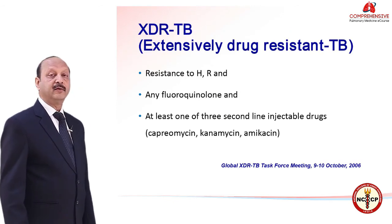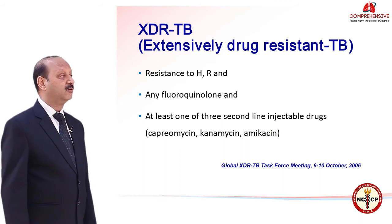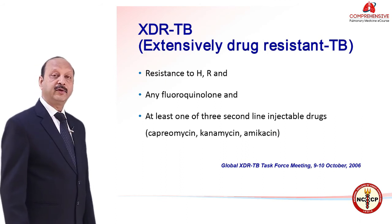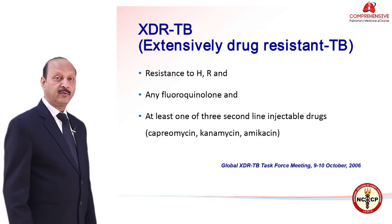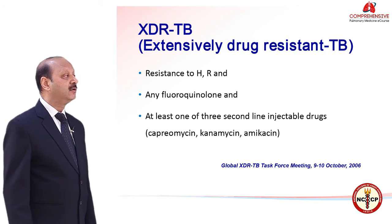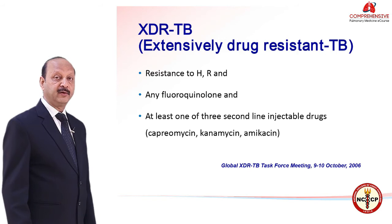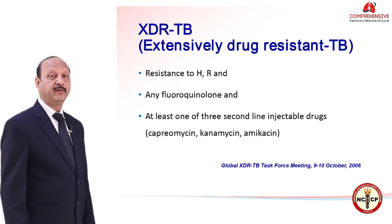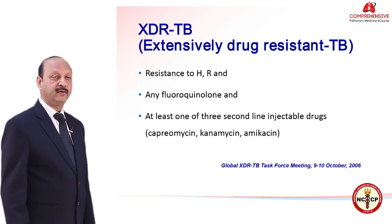XDR tuberculosis, that is extensive drug resistance tuberculosis, includes cases with resistance to INH and rifampicin, and any of the fluoroquinolones, and at least one of the 3 second-line injectables — capreomycin, kanamycin, and amikacin. Streptomycin is not included in the list of second-line injectables.